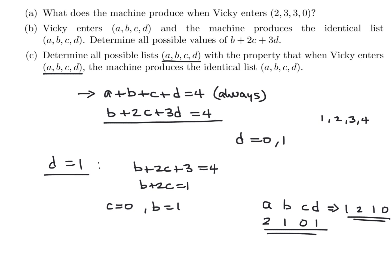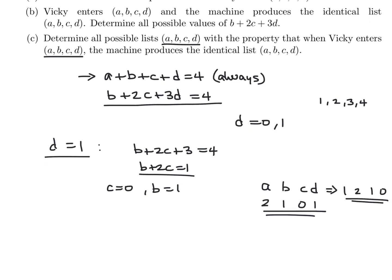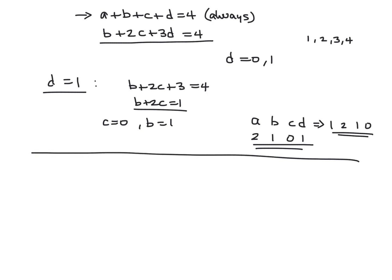Now, was there any other choices? If C is 0, can C be 1? No, C can't be 1 because, in this case, if C was 1, then you would never get 1. Okay. So, we've exhausted the D equals 1. So, we didn't get anything there. Let's try D equals 0. That's the only other option we have. So, that would mean B plus 2C is equal to 4 if you sub into there. And, now, C can be either 2, C can be either 1, or C can be either 0. If C is 0, B would be 4. If C is 1, B would be 2. And, if C is 2, B would be 0. Correct?